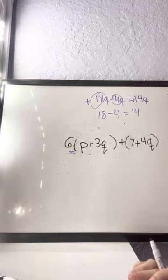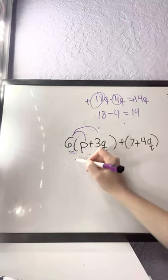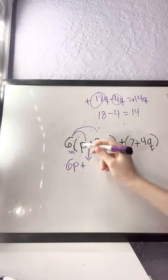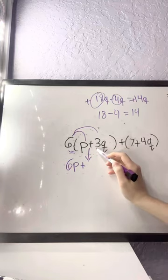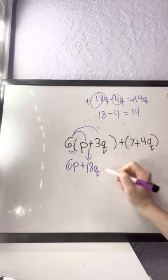Now here on the other hand, all you have to do is just distribute the 6, so we're going to get 6p again, bring down our positive sign, 6 times positive 3 is 18, and bring down the q.